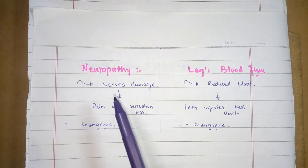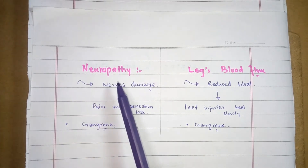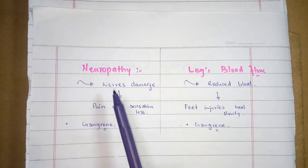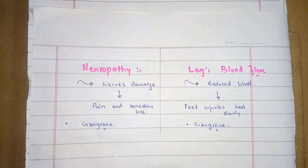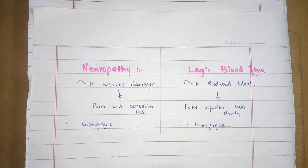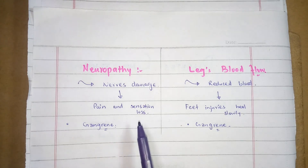In the case of microvascular complications, damage to the nerves is called neuropathy. The damage of small blood vessels affects the nerves, and high glucose damages the nerves in the peripheral nervous system. This may result in pain and sensation loss.